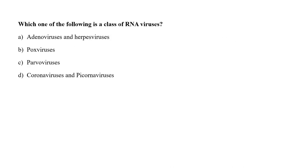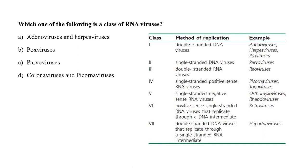Which one of the following is a class of RNA viruses? A. Adenoviruses and Herpes viruses, B. Pox viruses, C. Parvo viruses, or D. Coronaviruses and Picornaviruses? Adenovirus, Herpes virus and Pox viruses are double-stranded DNA viruses. Parvo viruses are single-stranded DNA viruses. Picornaviruses are single-stranded positive-sense RNA viruses, and so is coronavirus. So the correct answer is option D, coronaviruses and Picornaviruses.